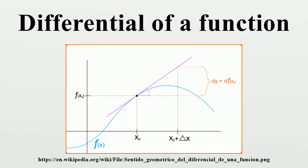This is because the derivative fx with respect to the particular parameter x gives the sensitivity of the function f to a change in x. In particular, the error delta x, as the variables are assumed to be independent, describes the worst-case scenario. The absolute values of the component errors are used, because after computation the derivative may have a negative sign.